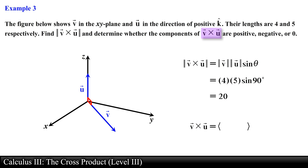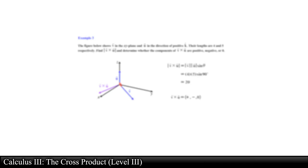Next we use the right-hand rule to determine the direction of vector v crossed with vector u. We point our fingers in the direction of vector v with our palms facing vector u and curl them towards vector u. Our thumb indicates the x-component is positive, the y-component is negative, and since the result lies on the xy-plane the z-component is equal to zero.